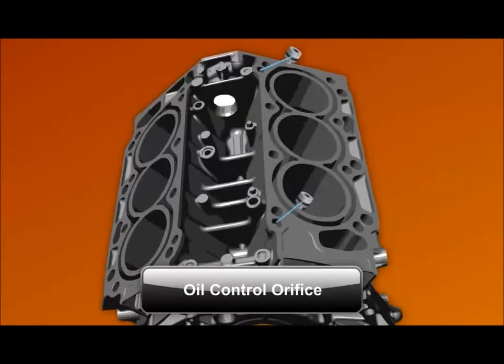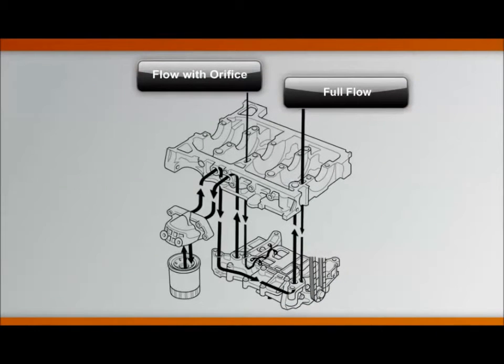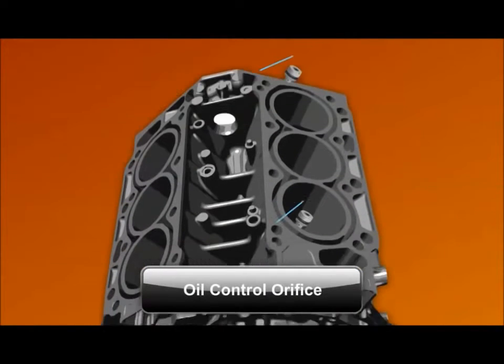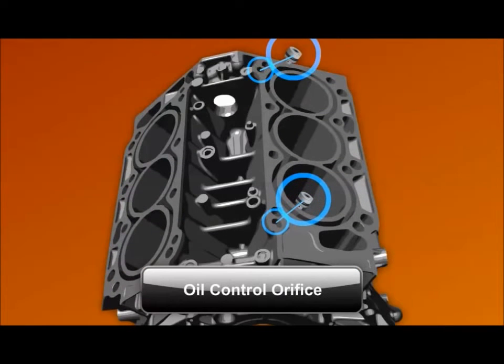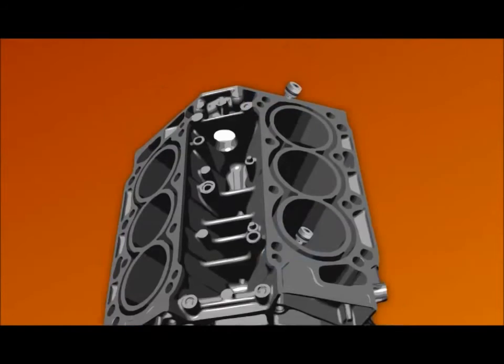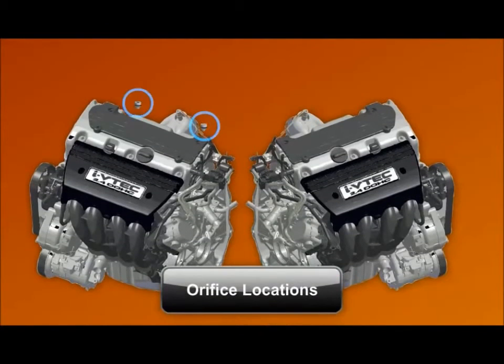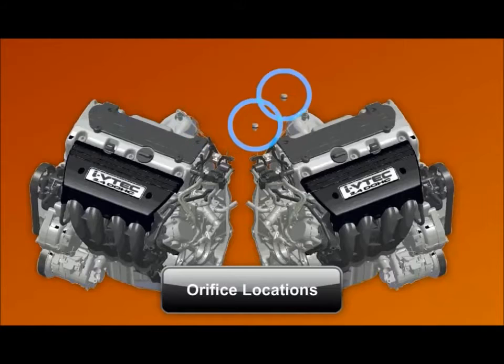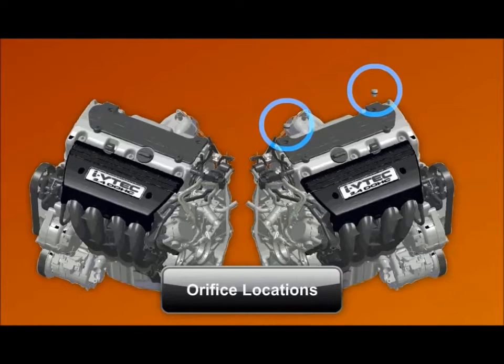In some cases, an oil passage includes an oil control orifice. This device reduces oil flow when installed in an oil passage. Whenever you disassemble an engine, keep track of these orifices. If you replace a block, be sure the new block has the correct oil control orifices, or transfer the orifices from the original block to the new engine before reassembly.